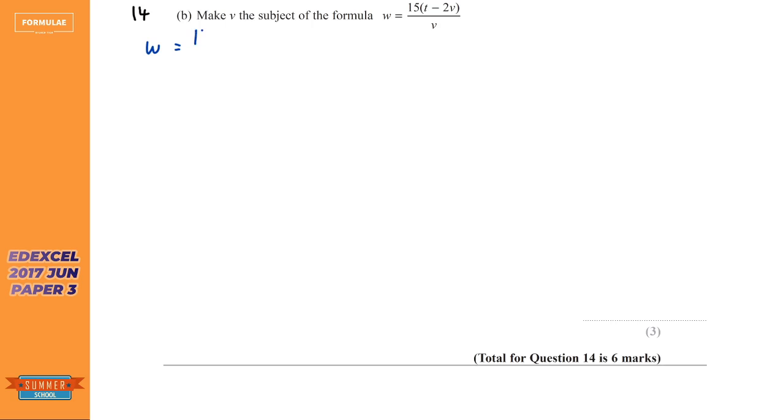So 15 times T, which is 15T. 15 times minus 2V is minus 30V. And over V. So the rule is if the letter is trapped in a fraction or bracket, times out the bracket and get rid of the fraction. So that's the first thing we're going to do. Or the second thing, because we've already got rid of the bracket. I'm going to get rid of it from the fraction. So this means divide by V. So all I'm going to do is times V both sides.